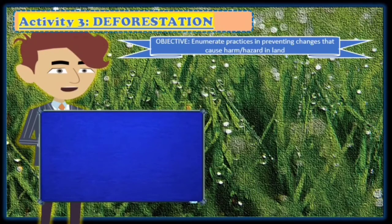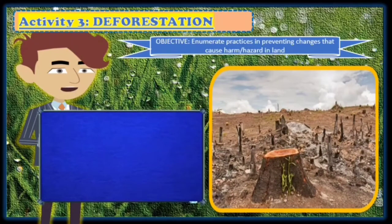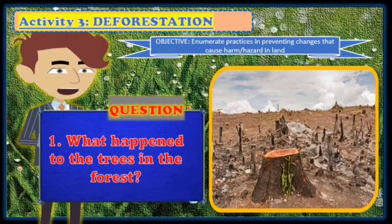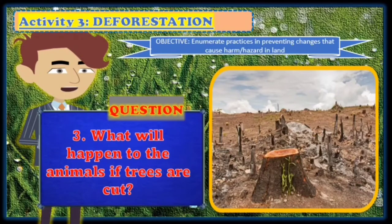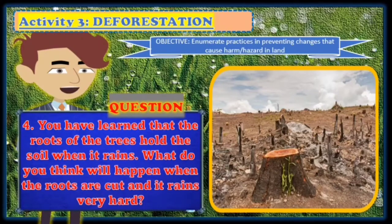Activity number three is deforestation. The objective is to enumerate practices in preventing changes that cause harm or hazard on land. Observe the picture and answer: What happened to the trees in the forest? Aside from the trees, what other living things live in the forest? What will happen to the animals if trees are cut? You have learned that the roots of trees hold the soil when it rains — what do you think will happen when the roots are cut and it rains very hard?